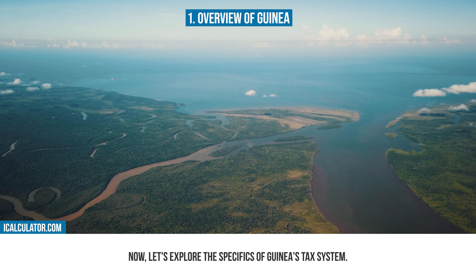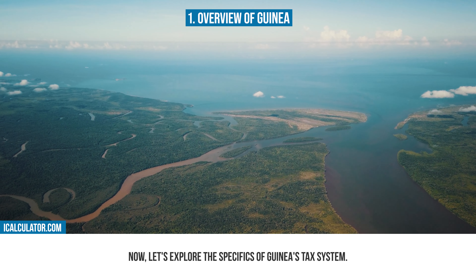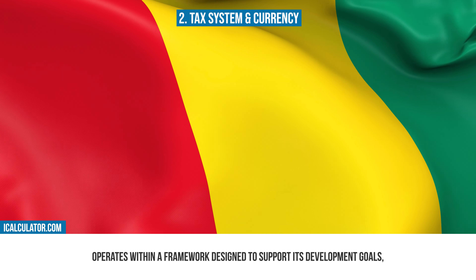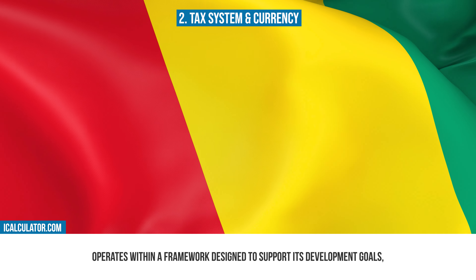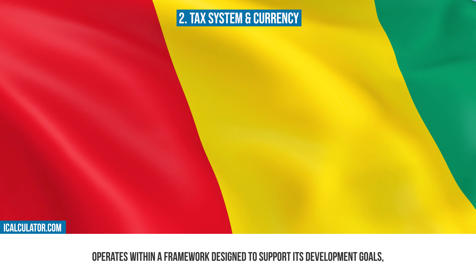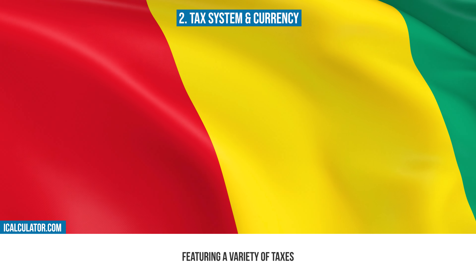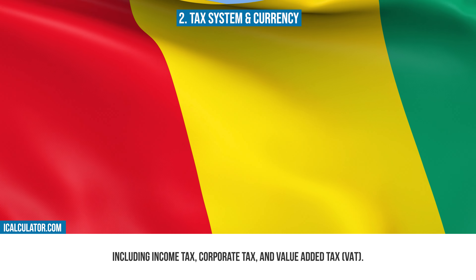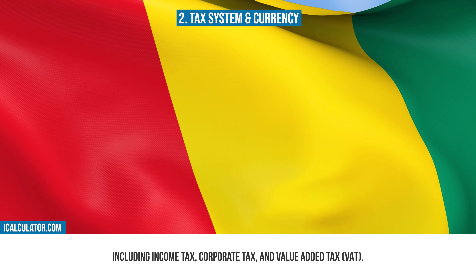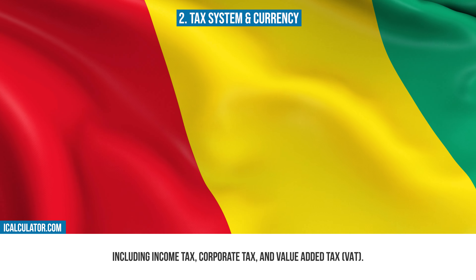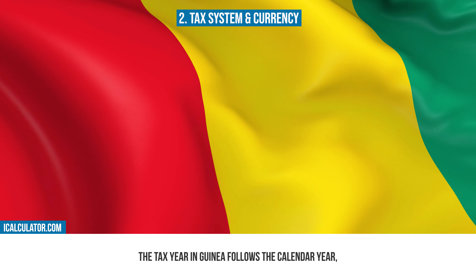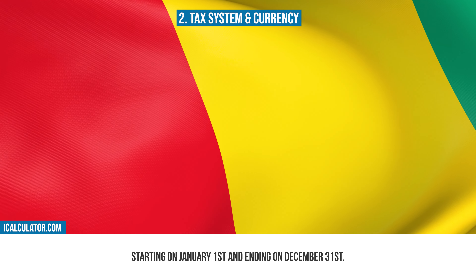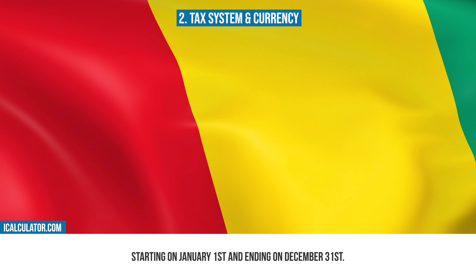Now let's explore the specifics of Guinea's tax system. Guinea's tax system operates within a framework designed to support its development goals, featuring a variety of taxes including income tax, corporate tax and value-added tax, VAT. The tax year in Guinea follows the calendar year, starting on January 1st and ending on December 31st.